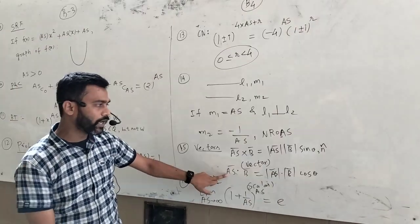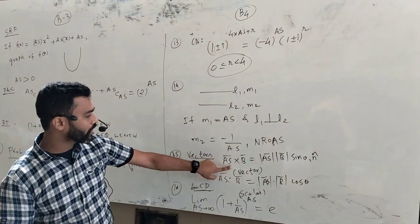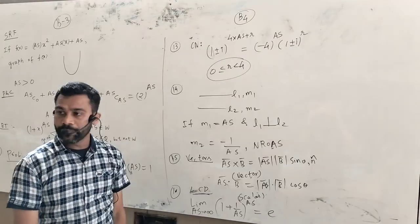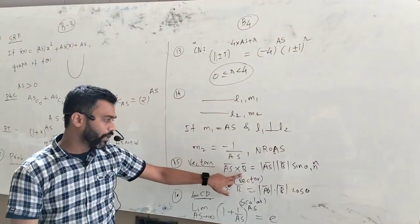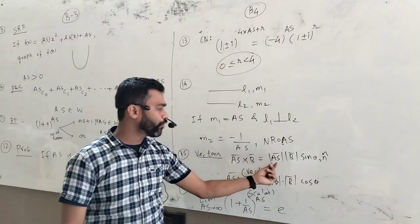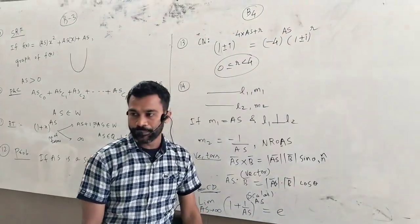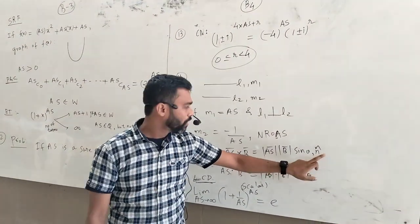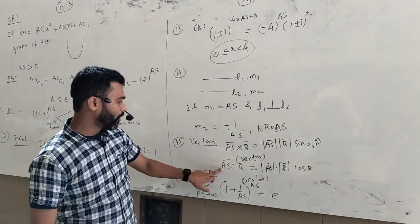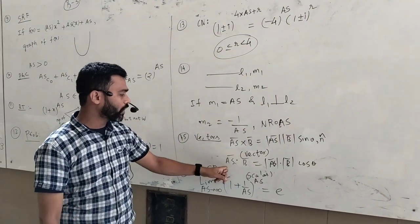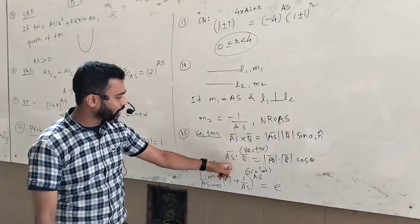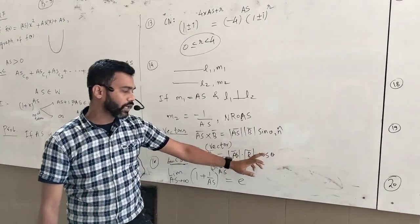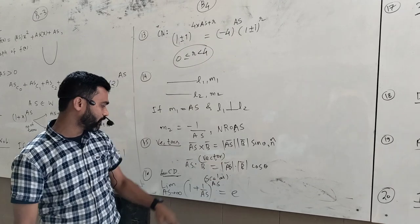Vectors — cross product and dot product. The resultant of two vectors: Anisar vector × Baya vector equals the magnitude of Anisar vector times the magnitude of Baya vector times sin θ, n-cap (where n-cap is the direction). For dot product: Anisar vector · Baya vector equals the product of their magnitudes times cos θ. Cross product is a vector; dot product is a scalar.